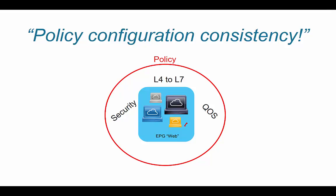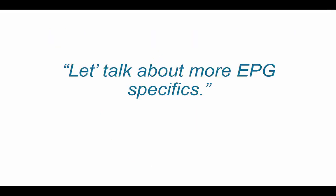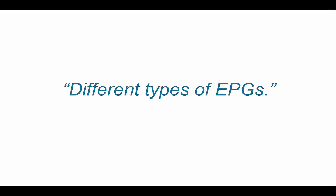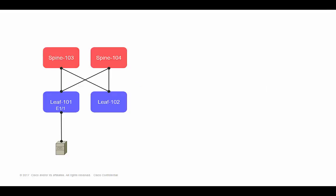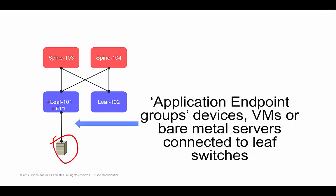Endpoint groups can also be abbreviated as EPGs. There are different types of endpoint groups. Behind LEAF-101 interface 1/1 is a bare-metal server, so that bare-metal server will be placed into what's called an application endpoint group. This also applies to virtual machines — both VMs and bare-metal servers are placed into application endpoint groups.